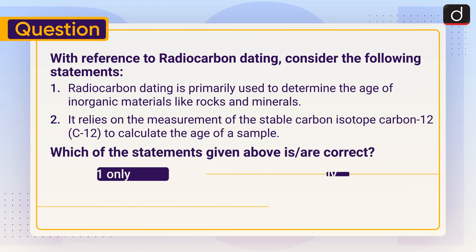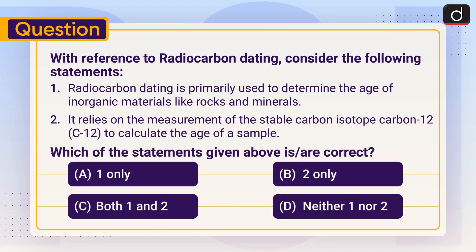Now, a practice question: With reference to radiocarbon dating, consider the following statements. One: Radiocarbon dating is primarily used to determine the age of inorganic materials like rocks and minerals. Two: It relies on the measurement of the stable carbon isotope carbon-12 (C12) to calculate the age of the sample. Which of the statements given above is or are correct — one only, two only, both one and two, or neither one nor two? Send your answer in the comment section. Stay tuned for the next episode. Thanks for watching, have a great day.